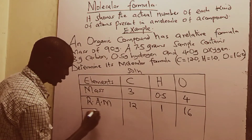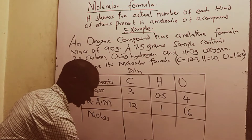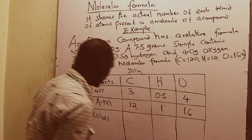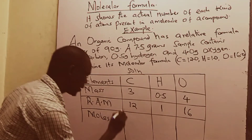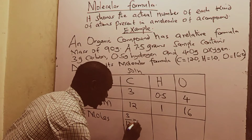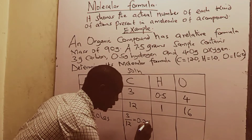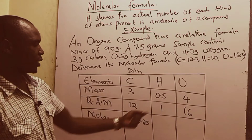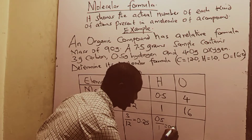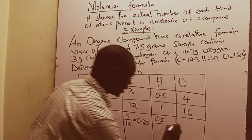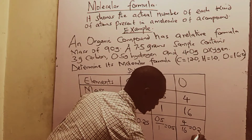Once we have the mass and the relative atomic mass, the next thing we do is calculate the moles. To get the moles, you take the mass and divide by the relative atomic mass, or simply the molar mass. So 3 divided by 12 gives a quarter, which is 0.25. For hydrogen, 0.5 divided by 1 gives us 0.5. And lastly, 4 divided by 16 also gives us 0.25.